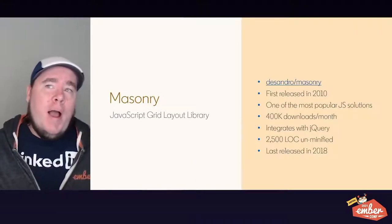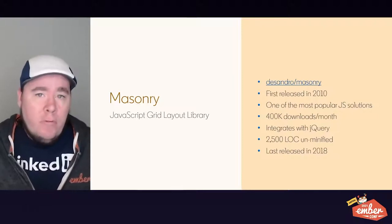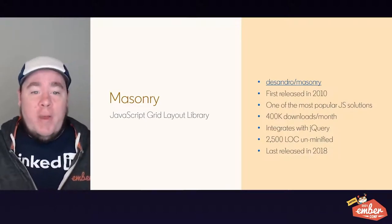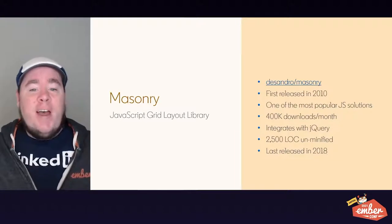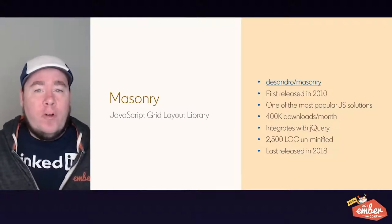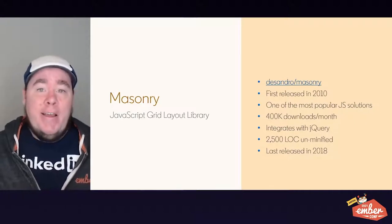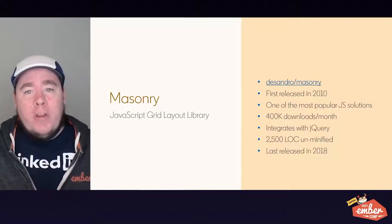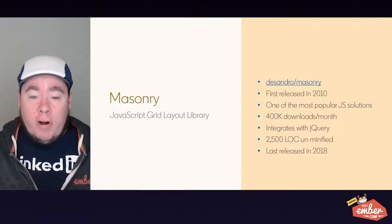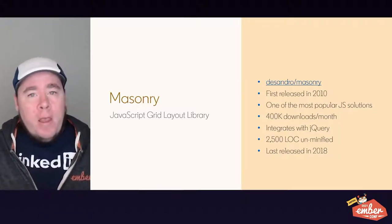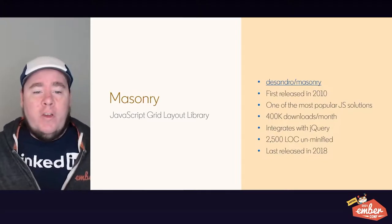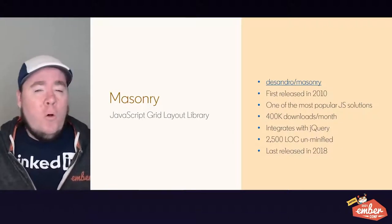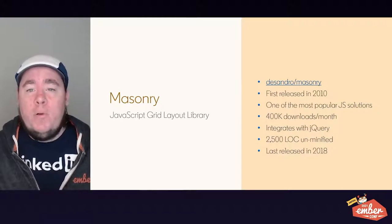Many of you may know about the masonry JavaScript library found on GitHub at desandro/masonry. It was first released in 2010 and is one of the most popular JavaScript solutions for masonry layouts today. In fact, it has over 400,000 downloads a month on NPM, and part of its popularity came from a strong integration with jQuery over the last 10 years.